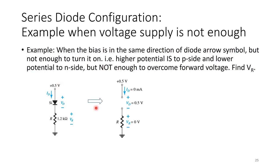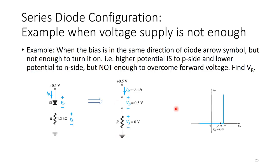Because 0.5 volts is not enough to turn the diode on, it remains off — an open circuit, like a no-bias condition. Therefore IT equals 0 milliamp. Applying Ohm's law across resistor R: VR equals I times R equals 0 times R equals 0 volts. The entire 0.5 volts appears across the diode. This corresponds to the region on the diode I-V curve below 0.7 volts.